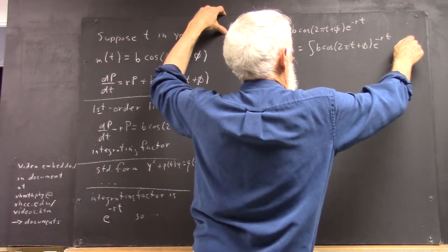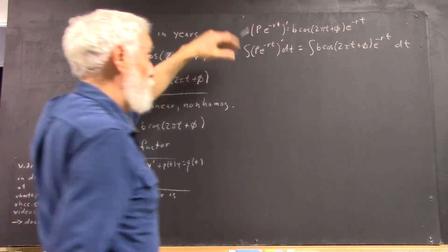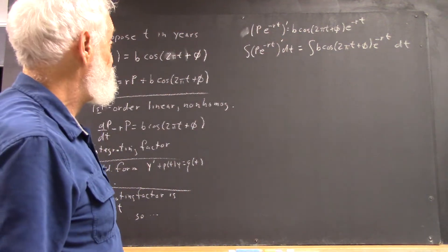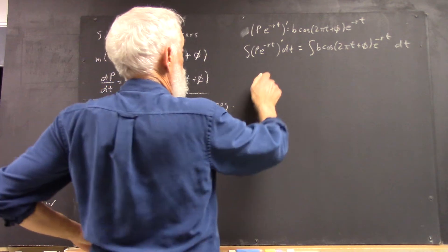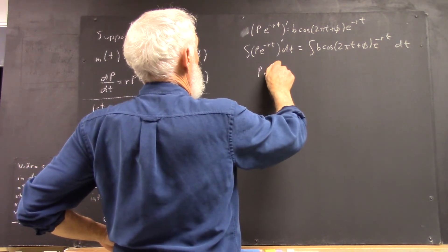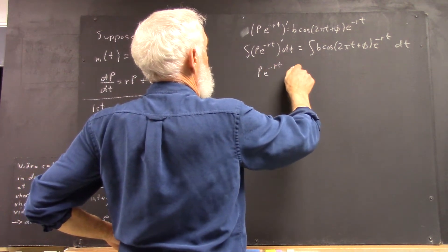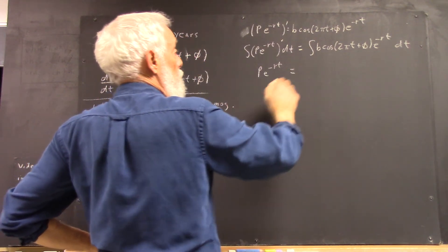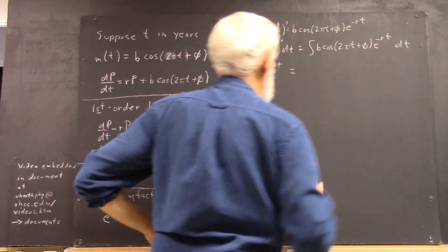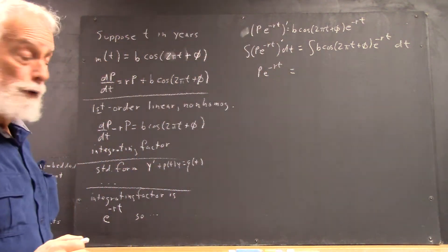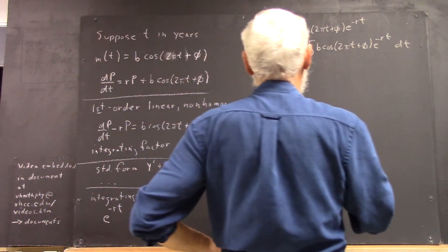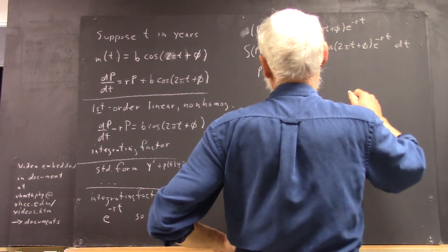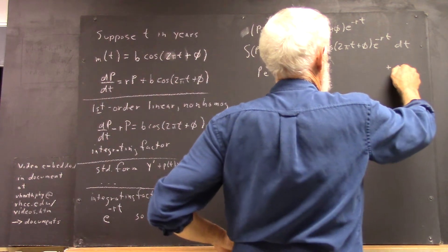And then we have this integral on the right-hand side, which gives you p e to the negative rt equals whatever you get when you integrate here. And of course, when you do this integral, you get a plus a constant.